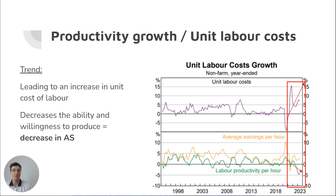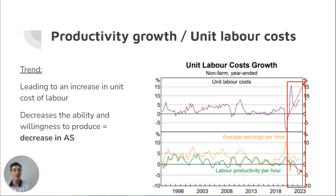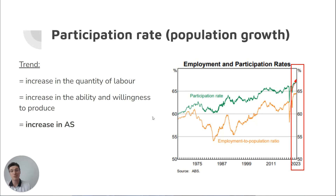Productivity growth, which is linked to unit labour costs, gives us two negative AS factors that are linked together. Unit labour costs are increasing, and that's linked to a decrease in productivity — we get less out of our workers, which means per hour we have to pay them more to produce the same output. A positive AS factor is the participation rate: more and more people have been joining the labour market, most likely due to the strong labour market. You could also talk about population growth and skilled migration.